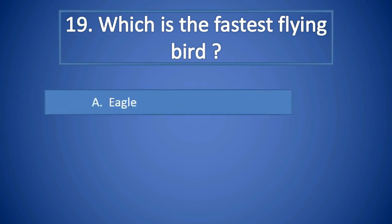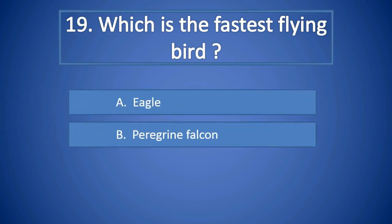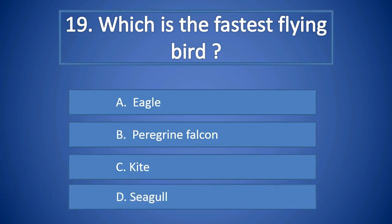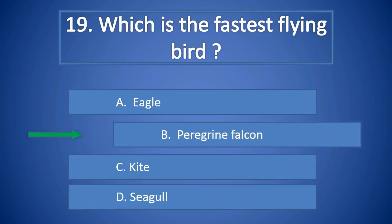Question Number 19: Which is the fastest flying bird? A. Eagle, B. Peregrine, C. Kite, D. Seagull. Right answer is B. Peregrine.